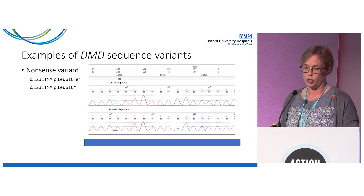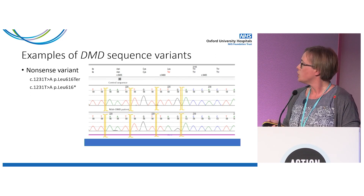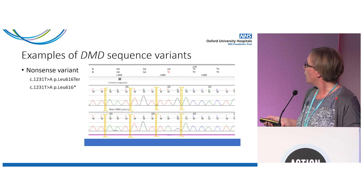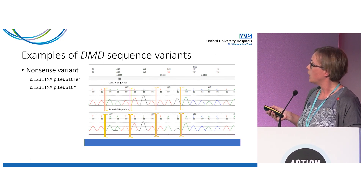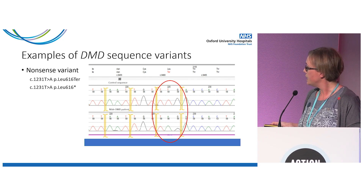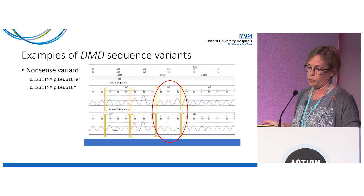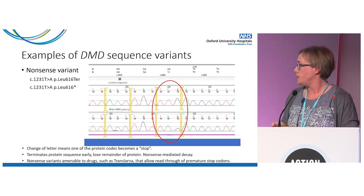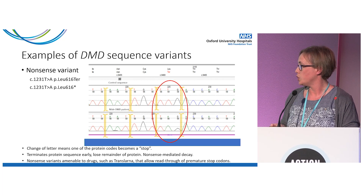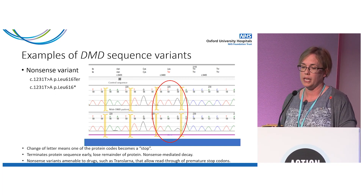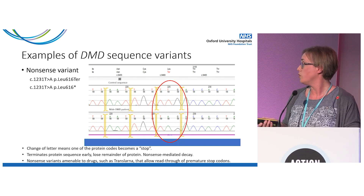The other type of substitution in Duchenne is a nonsense variant. Marking out the three-letter codons: in the reference sequence you have the codon TTG which encodes a leucine residue, but in the patient this T has changed to an A, so the codon changes to TAG, which tells the protein to stop — creating an early stop signal and terminating the protein sequence. You lose the remainder of the protein and don't get a functional copy. Nonsense mutations are important because they are amenable to drugs such as Translarna that allow read-through of the premature stop codon.